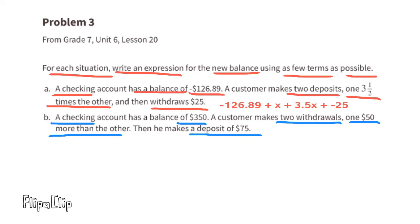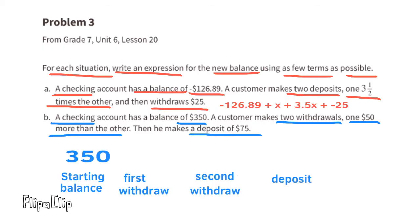B. A checking account has a balance of $350. A customer makes two withdrawals. One $50 more than the other. Then he makes a deposit of $75. The starting balance is $350. The first withdrawal is minus x. The second withdrawal is minus x plus 50. And then finally, the deposit is plus 75.